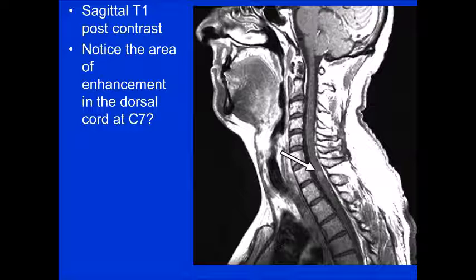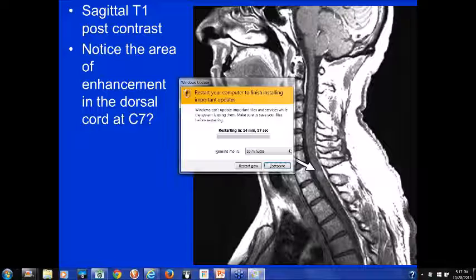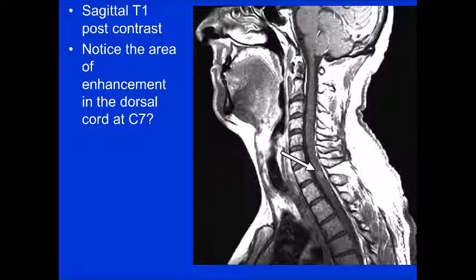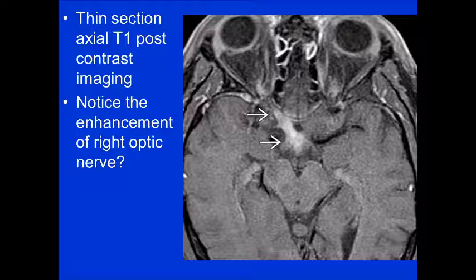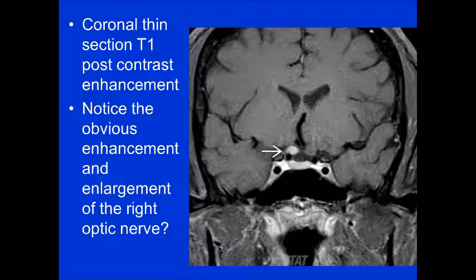When patients have visual symptoms, we may image the optic nerves, though it's not usually required unless symptomatic. Findings include dilation of the optic nerve sheath usually posterior to the globe, and optic nerve sheath enhancement. On the thin-section axial T1 post-contrast image on the right, you'll see enhancement along the optic nerve — a pretty classic but sometimes faint finding. On the coronal image, there is obvious enhancement and enlargement of the right optic nerve, correlating with the patient's symptoms.